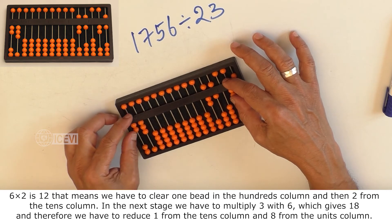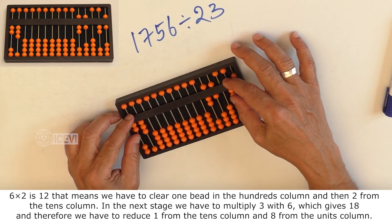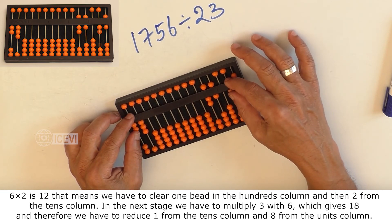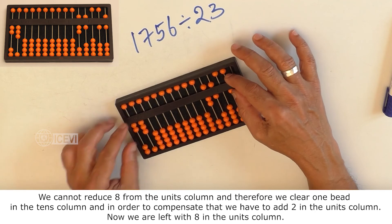In the next stage, we have to multiply 3 with 6, which gives 18 and therefore we have to reduce 1 from the tens column and 8 from the units column.